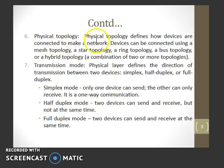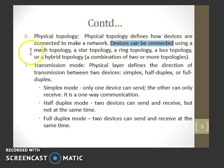Physical topology defines how devices are connected to make a network. Devices can be connected using a mesh topology, star topology, ring topology, bus topology, or a hybrid topology. These topologies were covered in the previous video.